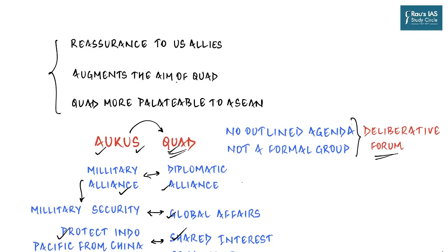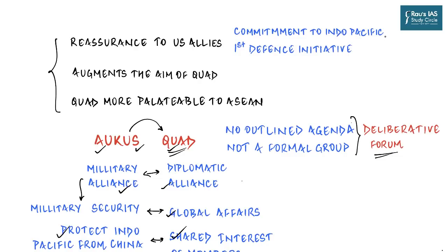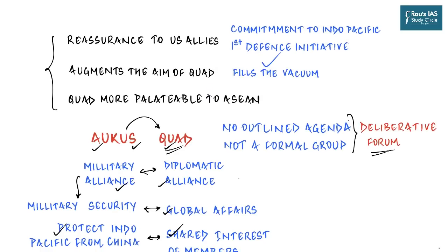First, formulating an AUKUS-like structure reassures US allies of its commitment in the Indo-Pacific — a very strong commitment from the US and UK, being the first of its kind defense initiative by the US in the Indo-Pacific region. Second, AUKUS is a shot in the arm of the larger Indo-Pacific agenda of which India, the US, Japan, and Australia are key partners, augmenting QUAD's aim of keeping the Indo-Pacific free, open, and inclusive.